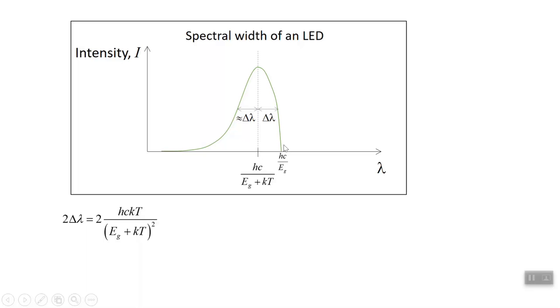It'll be a little asymmetric because it has to be a hard cutoff right there at hc over E gap. But there's no hard cutoff at the upper end, so there'll be a tail on the upper end. But the full width at half maximum is essentially given by delta lambda on either side.